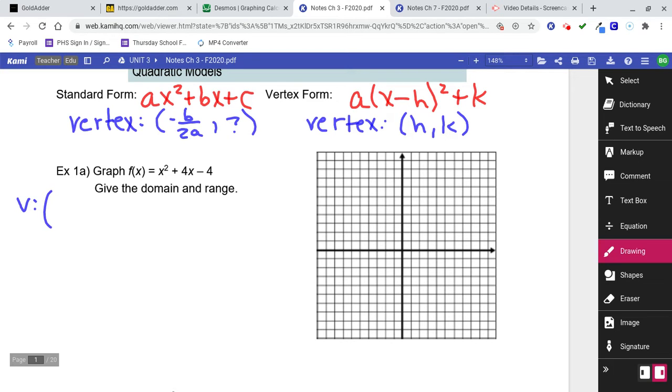So we're going to go negative b over 2a. In this problem, a is 1 and b is 4. So we'd have negative 4 over 2 times 1. Negative 4 over 2, that's negative 2. Okay, so that's the first part of a vertex. That's not the vertex. That's the x-coordinate of the vertex. I'm going to take that number and plug it in.